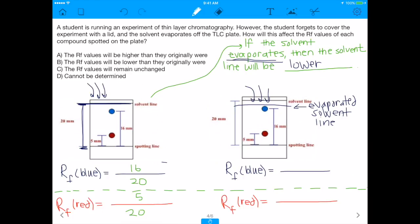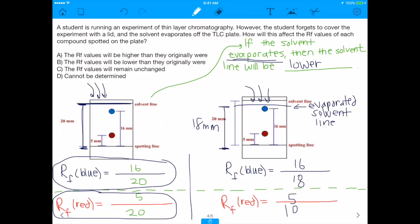So now, what's the new RF value? We already talked about the RF values before, right? 16 over 20 and 5 over 20. But what about this new evaporated solvent line? Well, with this new evaporated solvent line, maybe the new distance the solvent front moves is now only 18 millimeters. If it's only 18 millimeters, then now if we do our new RF values, the RF value of blue will be 16 over 18, and the RF value of red will be 5 over 18. The point is, compared to the previous ones, the RF values of both the red and blue are now much higher, because the solvent evaporated, and the solvent front distance decreased.